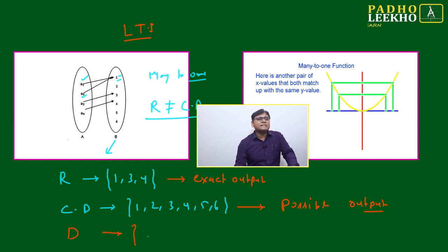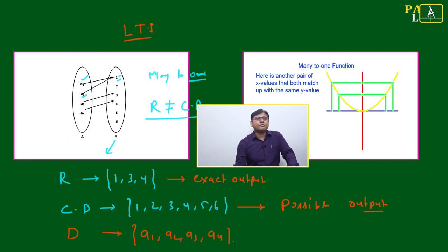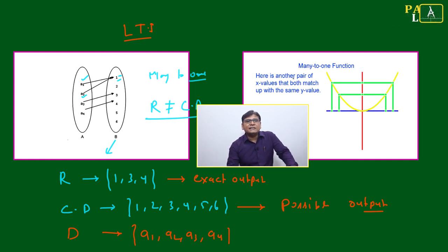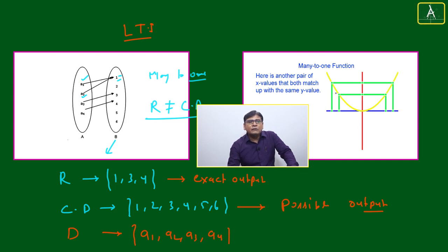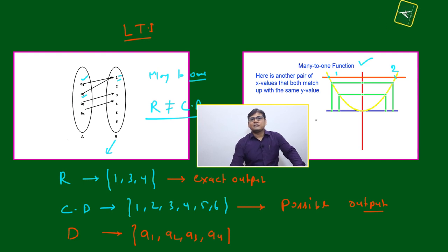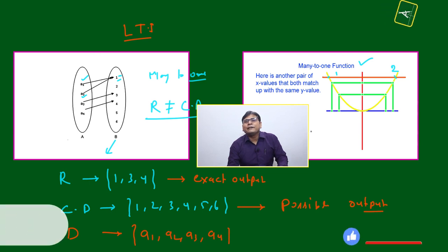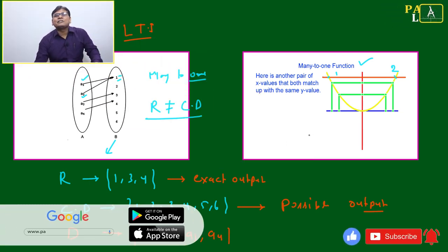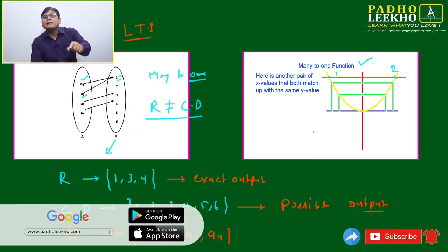Domain is simply the set of all inputs: A1, A2, A3, A4. That is the only difference between domain, codomain, and range. Now looking at one graph: here there are pairs of x values that both match up to the same output. Once you put a horizontal line on the graph, it cuts at two places — point one and point two. Then we can say it is a many-to-one function.